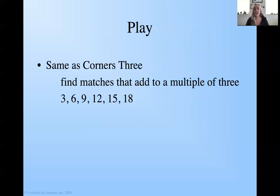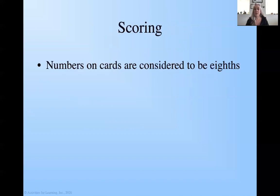In the Corners game I talked about in a previous blog, all the things added up to multiples of five: five, ten, 15, or 20. Corners three is where we want them to add up to multiples of three. So you've got three, six, nine, 12, 15, and 18. Our scoring is where things get different. The numbers on the cards can be considered eighths. Let's go look at a game and I'll show you what this is all about.